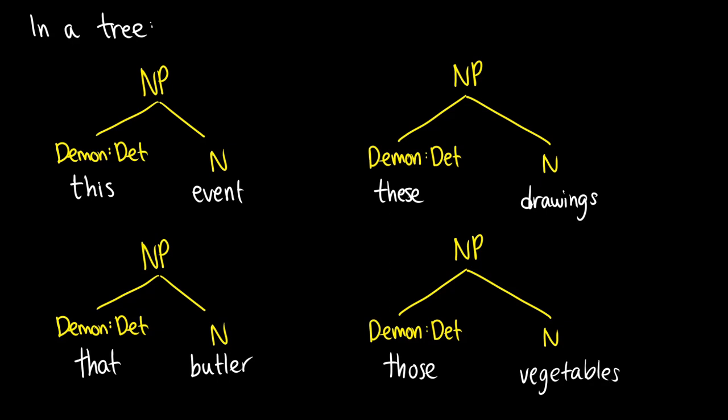So what I have here is I've labeled this as a determiner. When I put the colon in det, what I mean here is that it functions as a determiner. Because it comes before a noun, so this event, we're specifying which event we're talking about. In the case of these drawings, we're specifying which drawings we're talking about. That is why we say these function as a determiner.